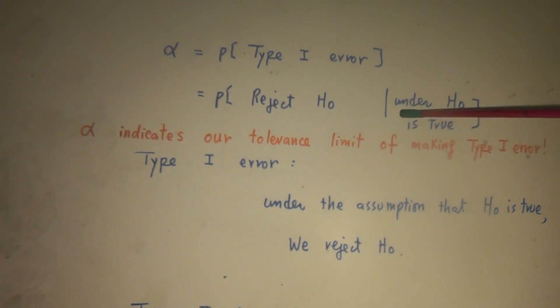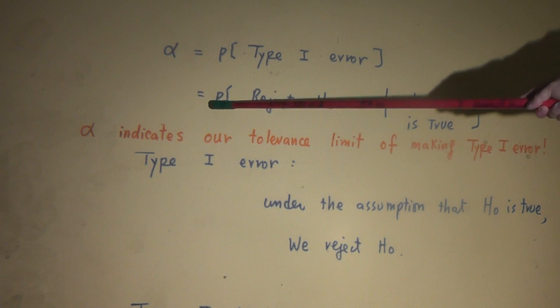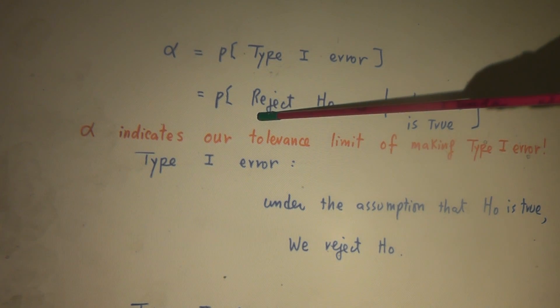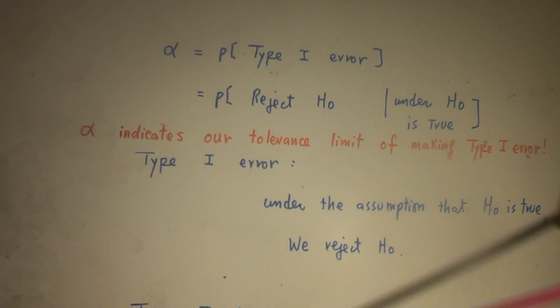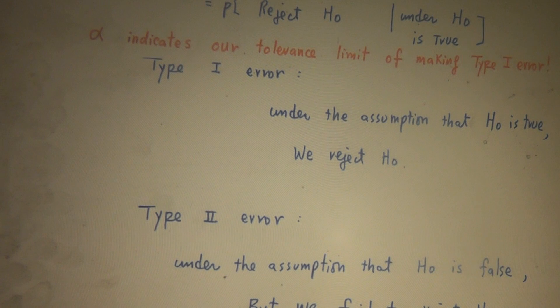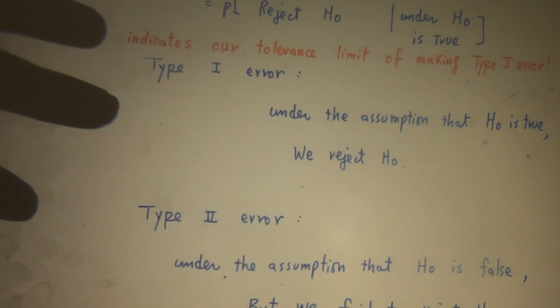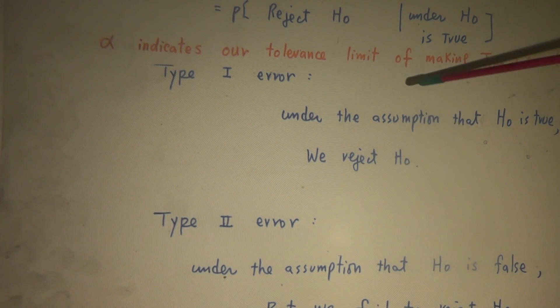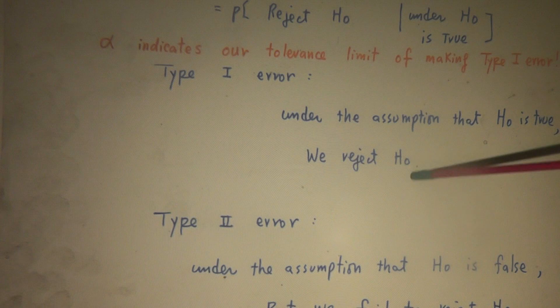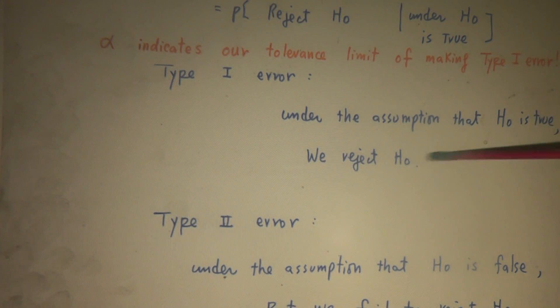What is alpha? Alpha is a probability of making Type I error. And what's Type I error? Well, Type I error is, given that H naught is true, but our decision reject H naught. So what is alpha? Alpha is a conditional probability that, given that under the assumption that H naught is true, what is the probability we reject H naught? So in this case, alpha indicates our tolerance limit of making Type I error. But what is Type I error? Type I error: under the assumption that H naught is true, we reject H naught. This is Type I error. Under the assumption that H naught is true, but we reject H naught.